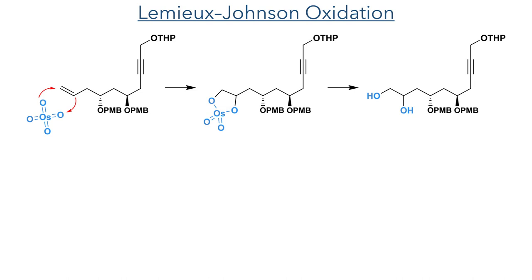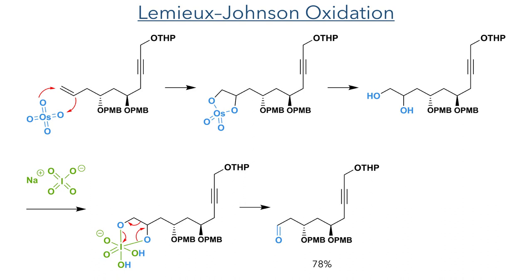Taking the allylated compound forward, it was then subjected to a Lemieux-Johnson oxidation. The alkene undergoes a cycloaddition with osmium tetroxide, and the cyclic intermediate then hydrolyzes to produce a 1,2-diol. This then reacts with sodium periodate to form a cyclic intermediate that undergoes oxidative cleavage, breaking a carbon-carbon bond and producing an aldehyde in a 78% yield.